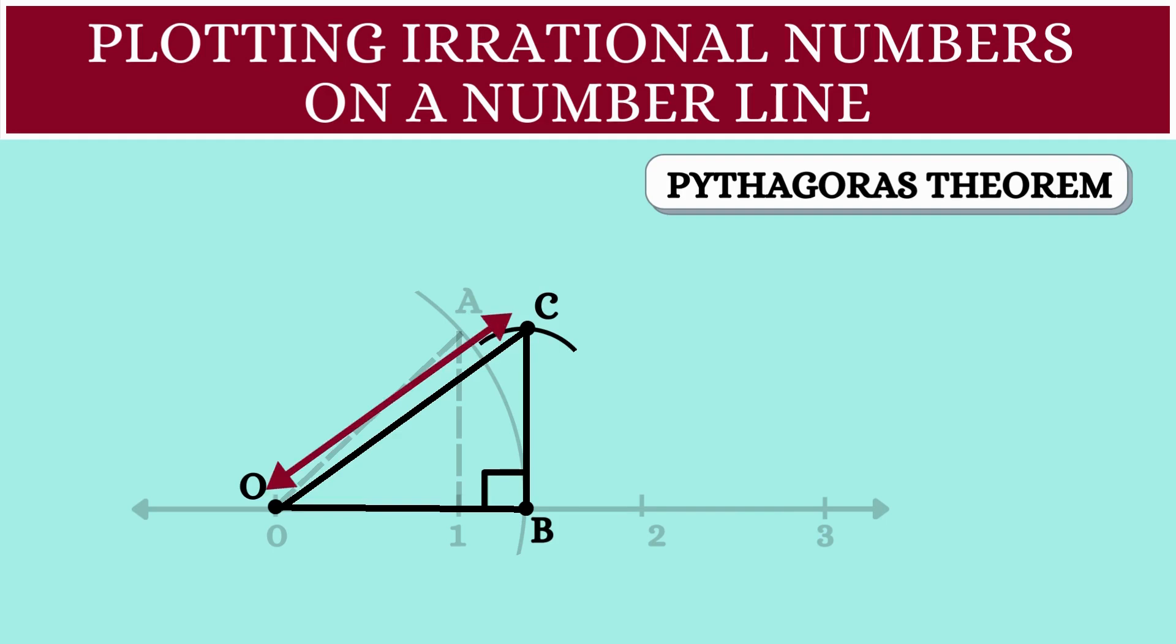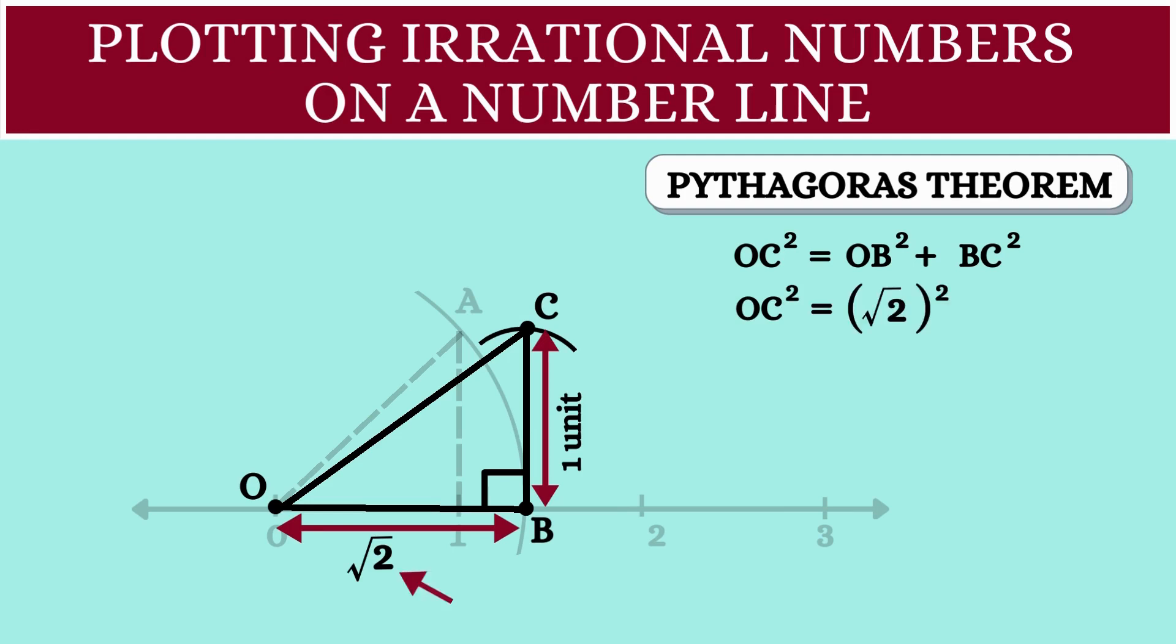So, according to the theorem we have OC square is equal to OB square plus BC square. We already know that the length OB is square root of 2 and the length BC is 1 unit.